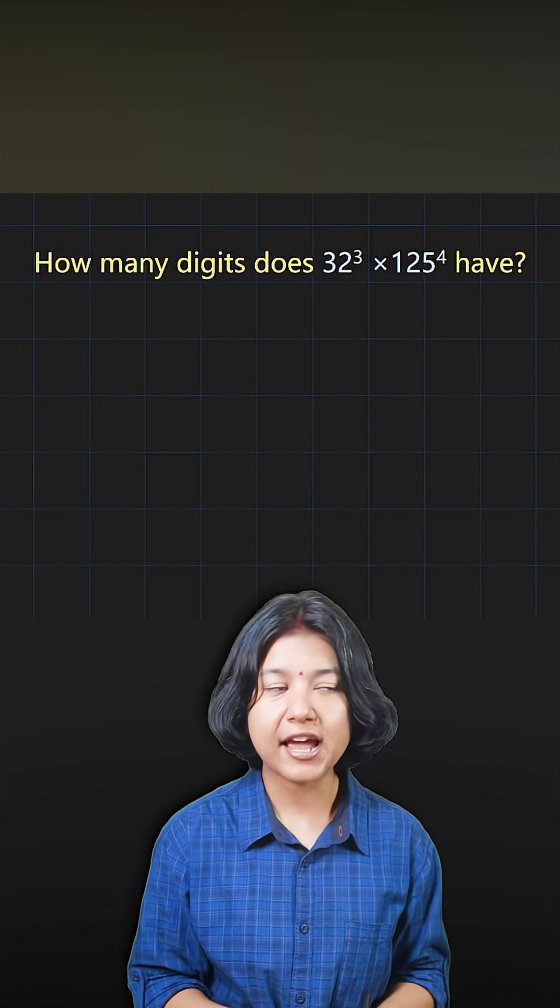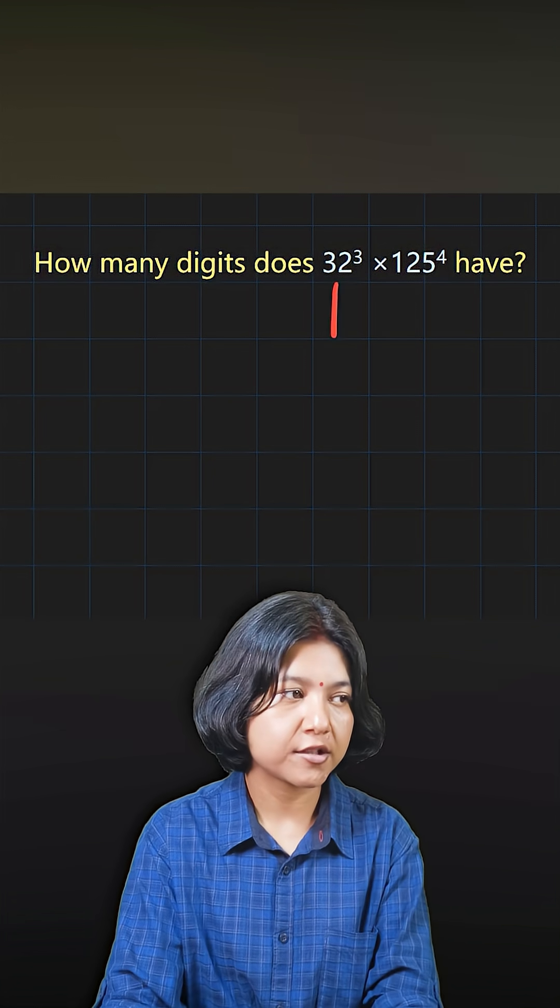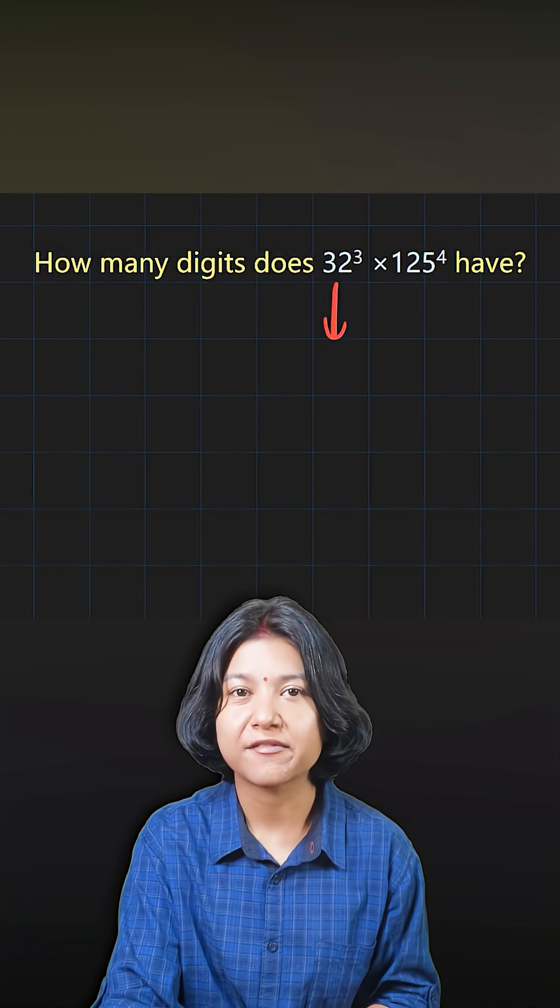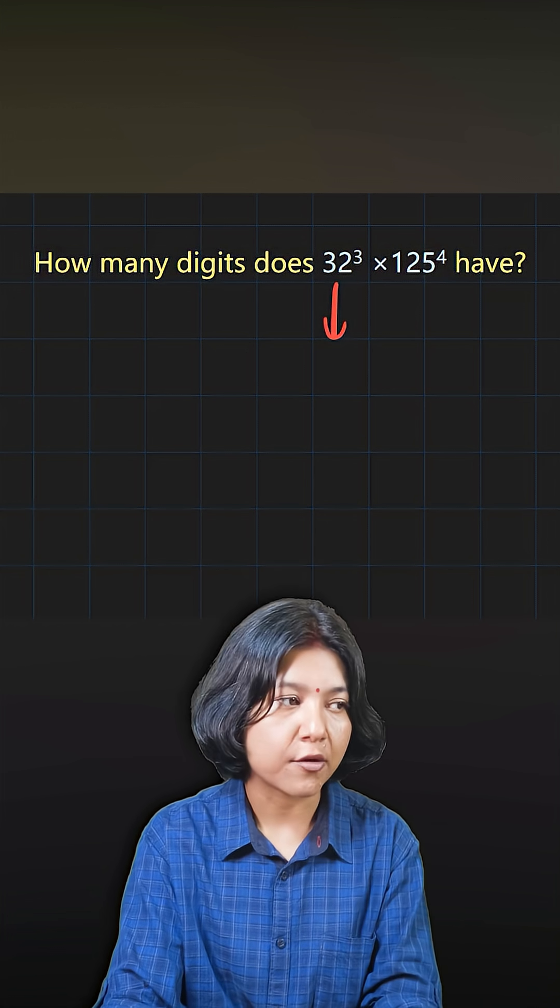How many digits does this number have? If you look at 32, 32 is a number which can be prime factorized as 2 to the power of 5.